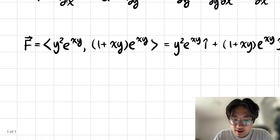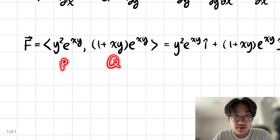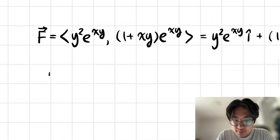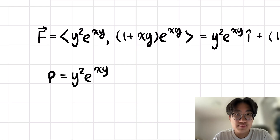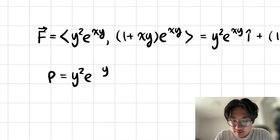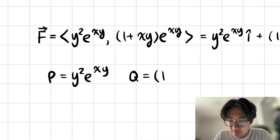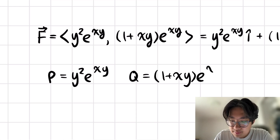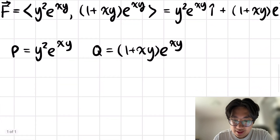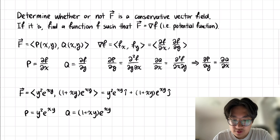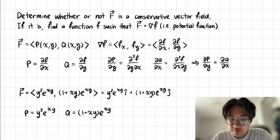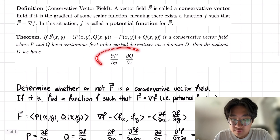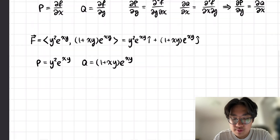We'll set P equal to y squared e to the xy — remembering that P is a function of x and y — and Q equal to 1 plus xy times e to the xy. From here, we'll first answer the first part of the question: determining whether or not F is a conservative vector field. By this theorem, it is sufficient to check that condition.